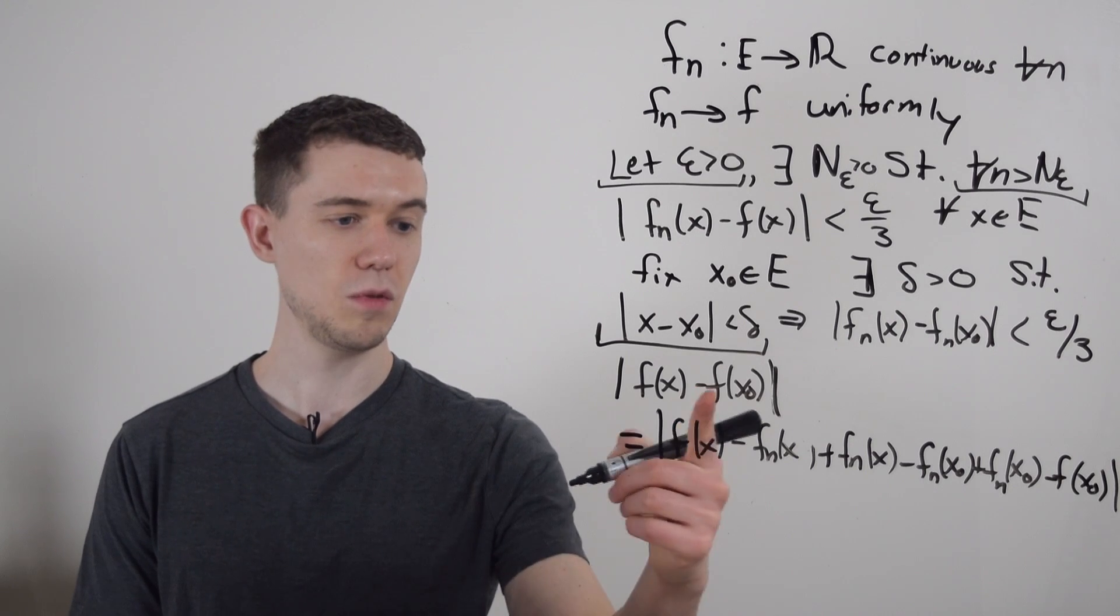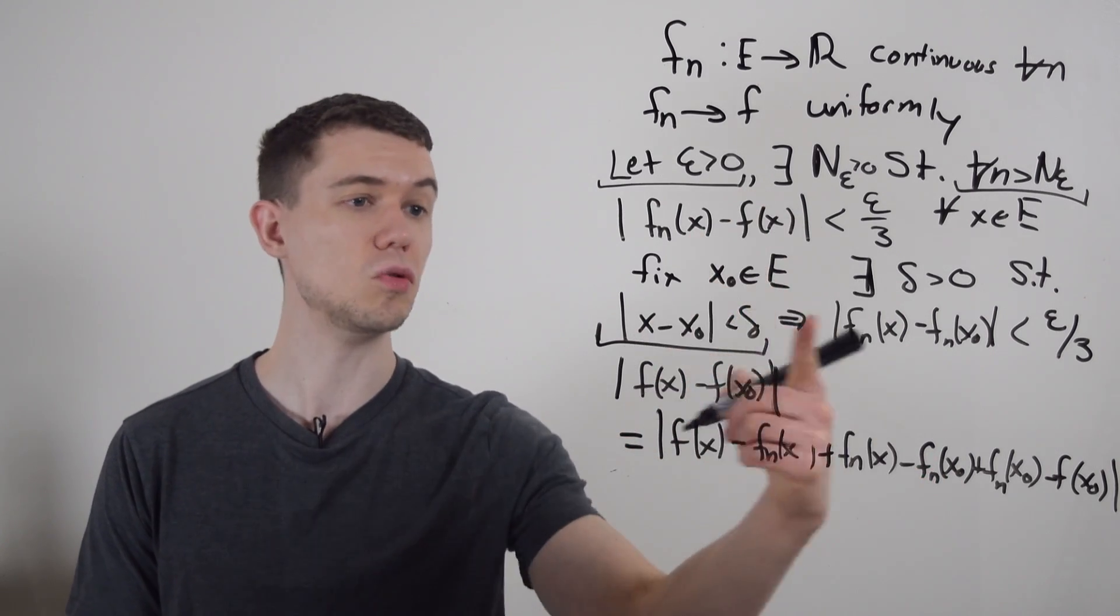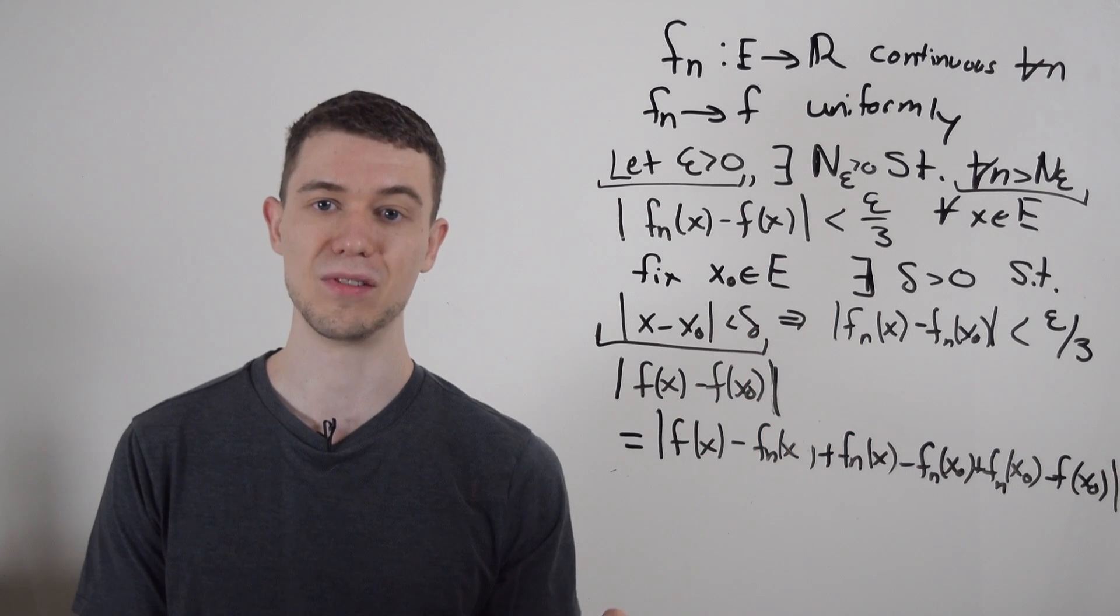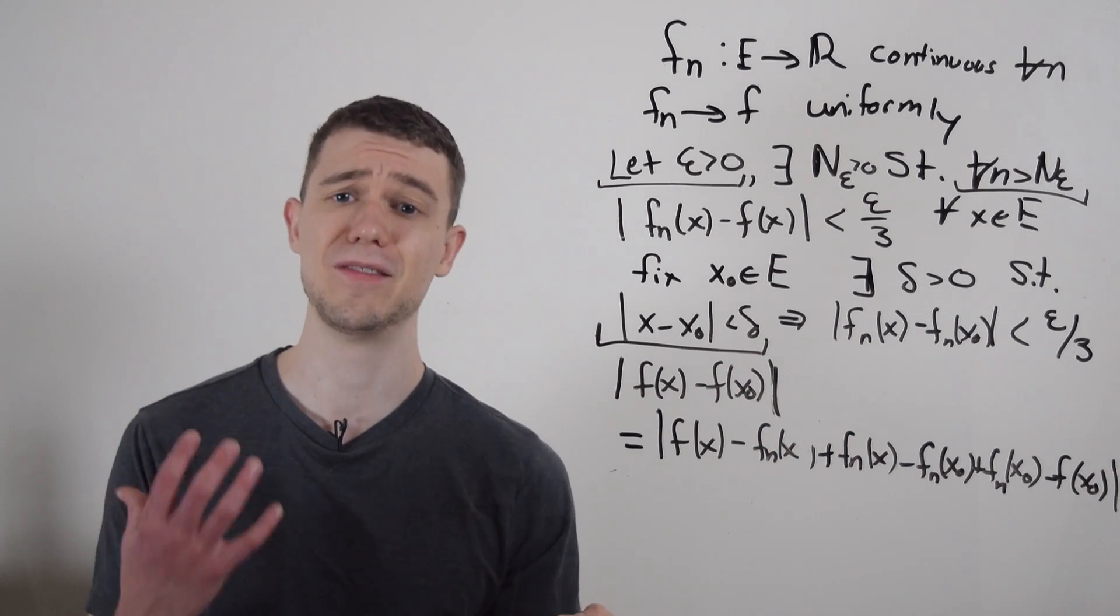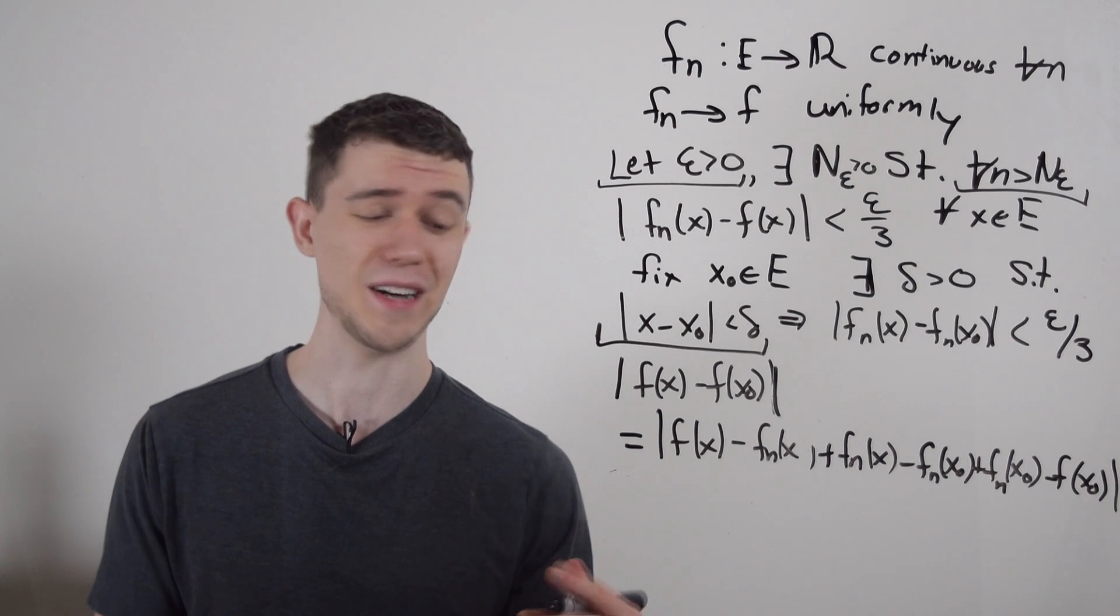So you can see in between here, I've added zero twice. And I've done that so I can introduce these facts that I've concluded up here. And now I take advantage of the triangle inequality, just like you do with many real analysis proofs.